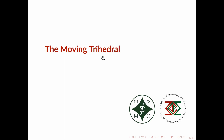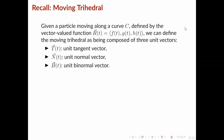Hi everyone. In this video we'll be reviewing the moving trihedral. First let's recall some concepts regarding the moving trihedral. Given a particle moving along a curve C defined by the vector-valued function r, we can define the moving trihedral as being composed of three unit vectors: the unit tangent vector, the unit normal vector, and the unit binormal vector. We're going to go through the definitions of each of these one by one.